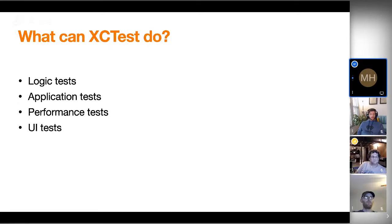XCTest can do four primary different types of tests: logic tests, application tests, performance tests, and UI tests. The difference between logic and application tests used to be rather large — in the olden days, you had to run logic tests in the simulator and application tests had to run on a physical device. But that isn't the case anymore, so the line is kind of blurred. In practice, you'll be doing three major types of tests.